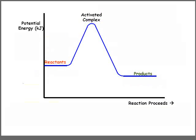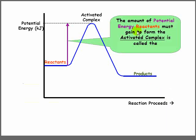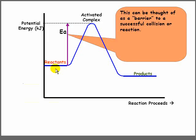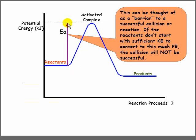Let's look at this graph again. The amount of potential energy reactants must gain in order to form the activated complex is called the activation energy, EA. It is indicated by an arrow showing the energy difference between the reactants and the energy of the activated complex. This can be thought of as a barrier to a successful collision. The collision must somehow cross this barrier before it can be successful. If the reactant molecules don't start with sufficient kinetic energy to convert to this much potential energy, the collision will not be successful.